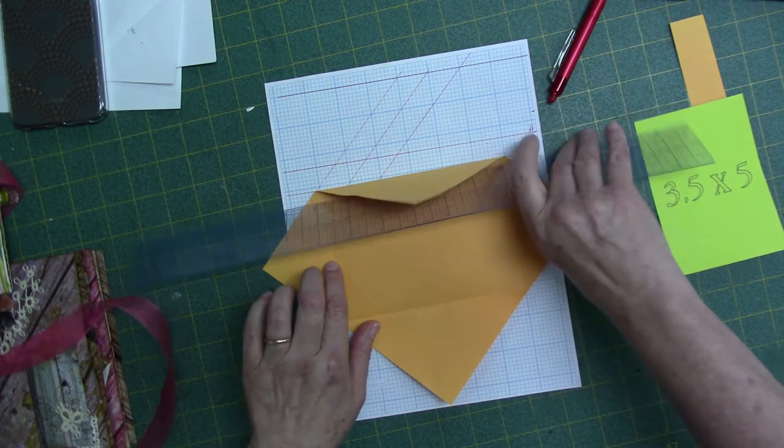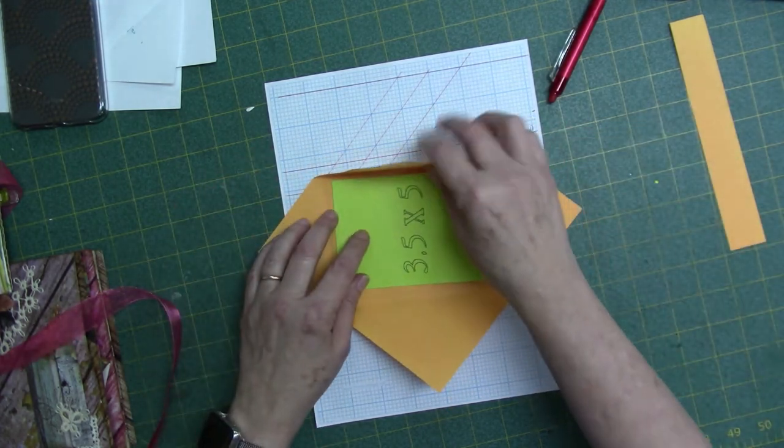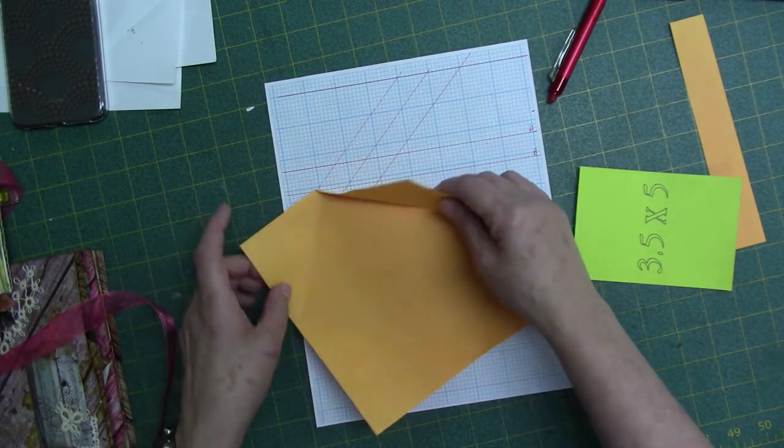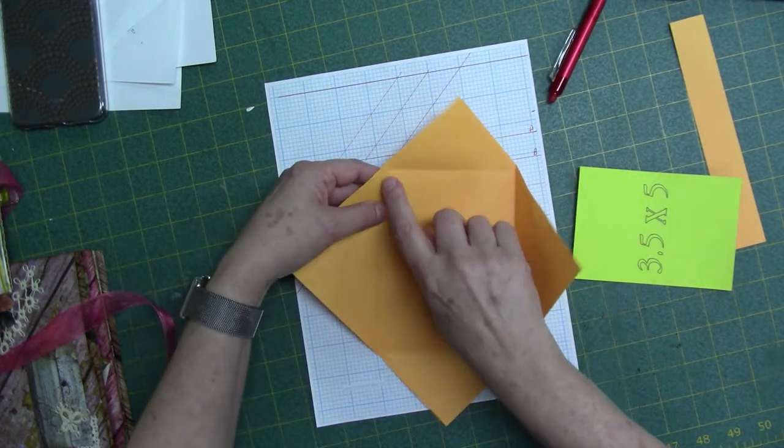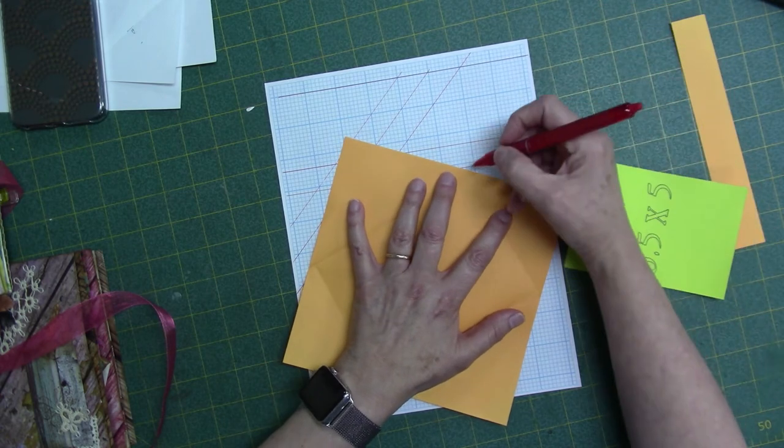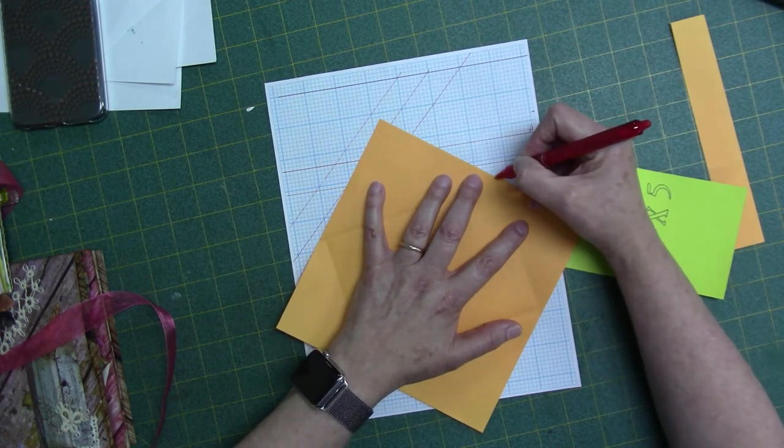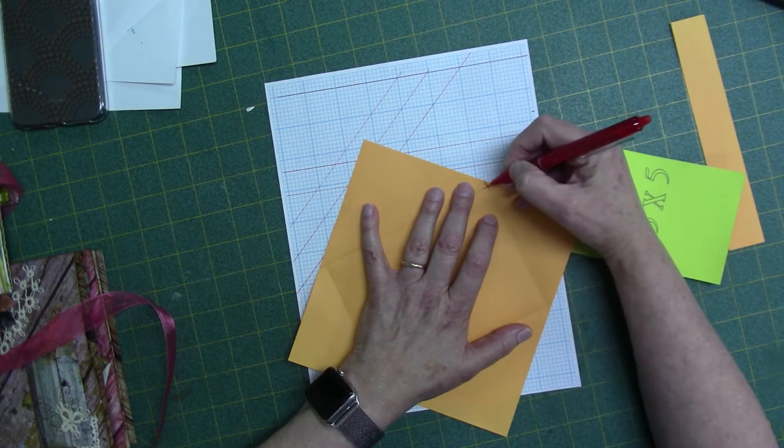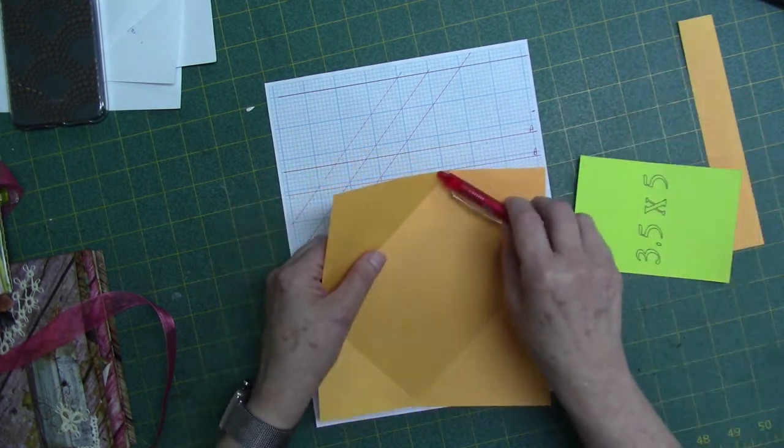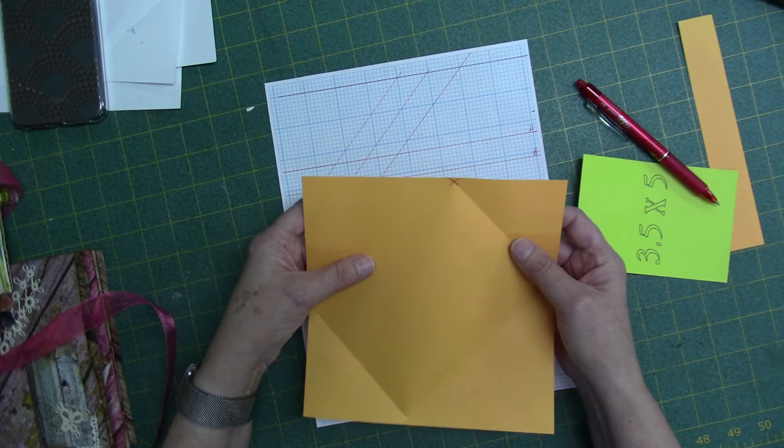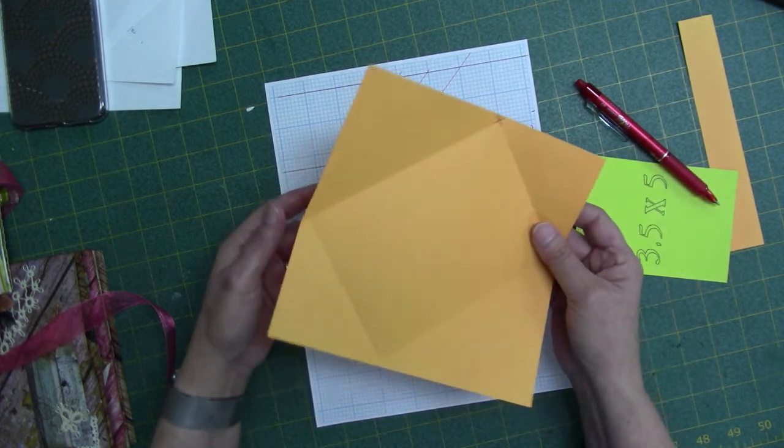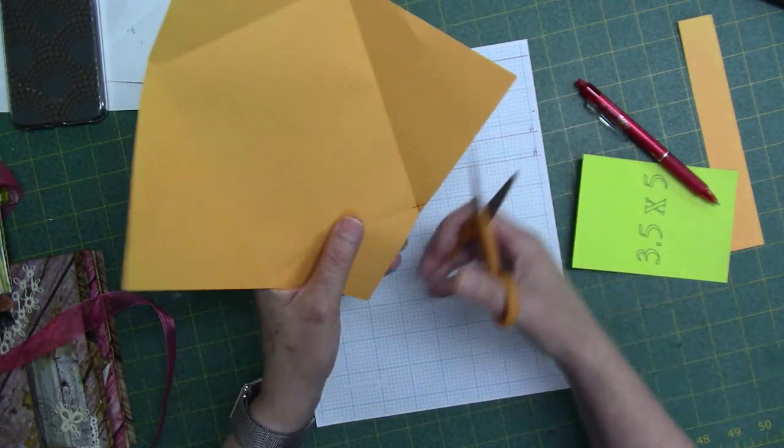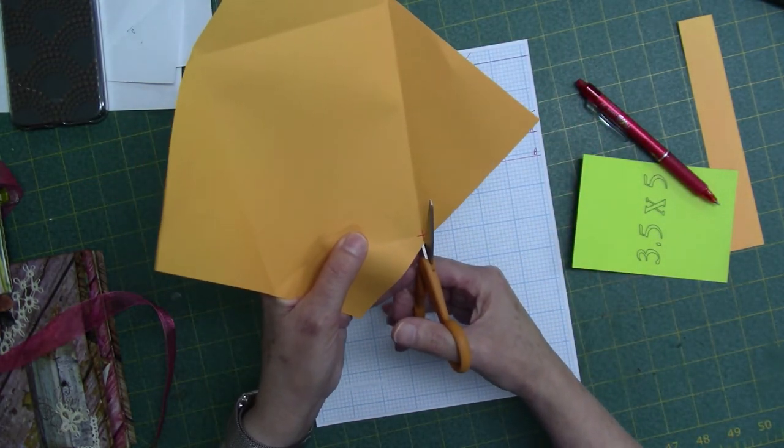Now, you really don't have to be this precise when you're making envelopes. You can just eyeball it and fold it, but I like to have something that can be repeated over and over again. Now, where these lines cross, there's going to be a little triangle. So this is where they cross, like that. And this is an erasable pen, so I'll be able to erase that and use this envelope for a project.